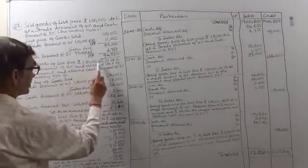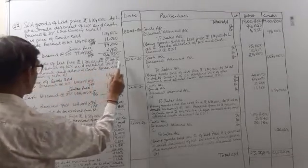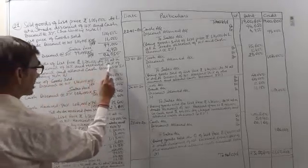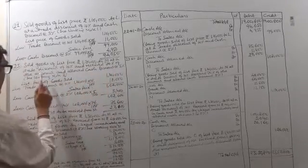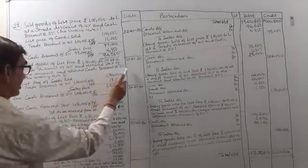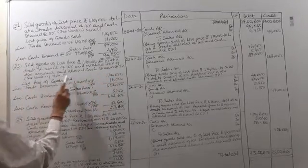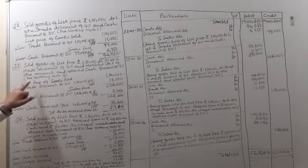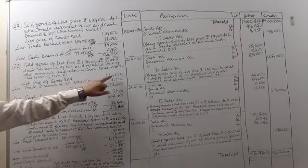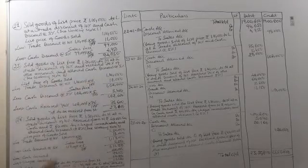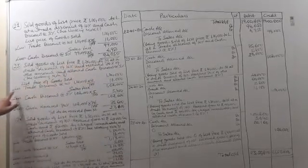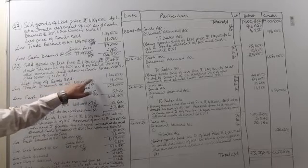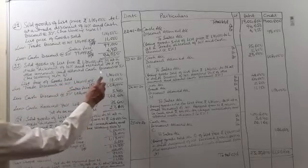Transaction 23: goods sold to M at a trade discount of 10%, and 70% of the amount was received, with cash discount allowed at the rate 5%. See working note 2. List price of goods sold was 1,20,000. Less trade discount at the rate 10%: 1,20,000 into 10 by 100 equals 12,000. From 1,20,000 minus 12,000, it comes to 1,08,000.